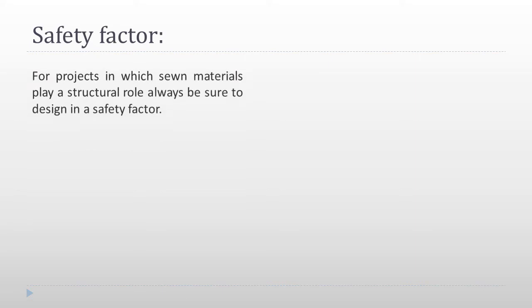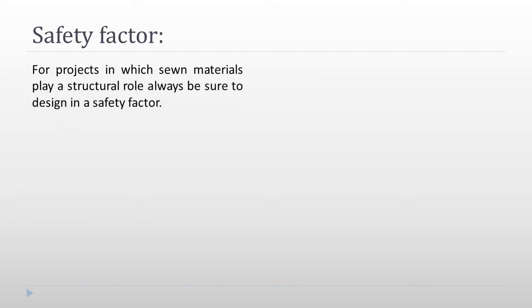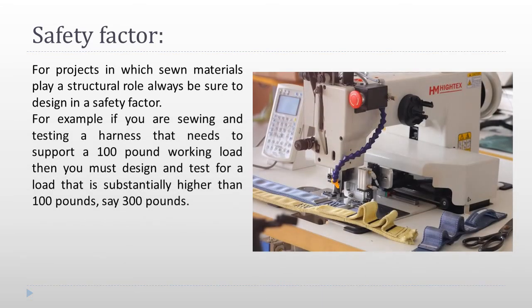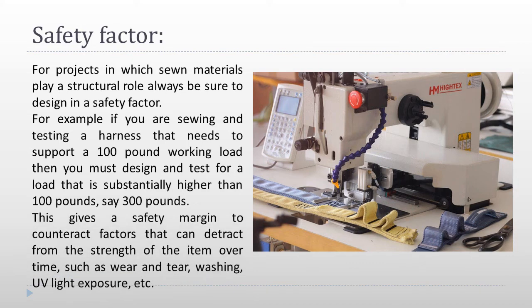Safety factor: for projects in which sewing materials play a structural role, always be sure to design in a safety factor. For example, if you are sewing and testing a harness that needs to support a 100-pound working load, you must design and test for a load substantially higher than 100 pounds, say 300 pounds. This gives a safety margin to counter factors that can detract from the strength of the item over time such as wear and tear, washing, and UV light exposure.